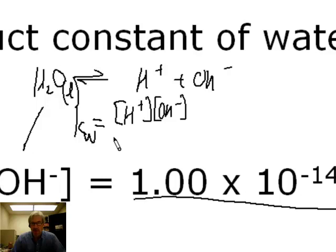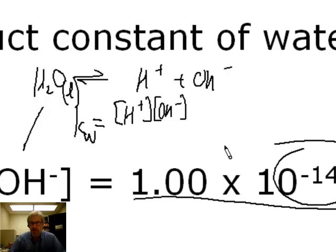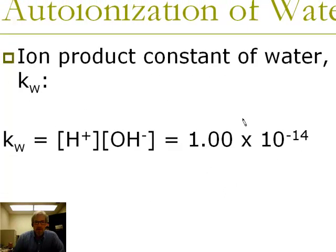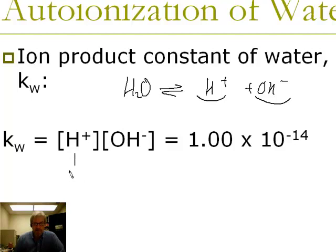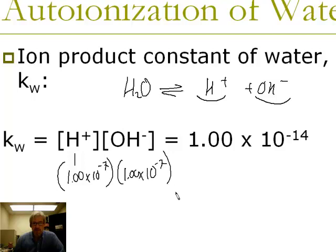Kw equals 1 × 10⁻¹⁴. That very small number tells you this dissociation doesn't happen to a great extent in water. For pure water, because of the one-to-one stoichiometry, the concentration of H⁺ and the concentration of OH⁻ at equilibrium are equal — every mole of H⁺ is formed only when a mole of OH⁻ is also formed. So the concentration of H⁺ in pure water is 1.00 × 10⁻⁷ M, and OH⁻ is also 1.00 × 10⁻⁷ M. Multiplied together, you get 1 × 10⁻¹⁴.